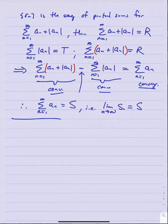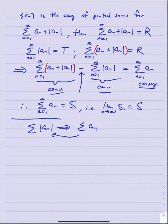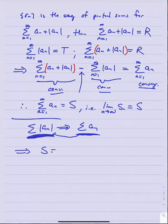Just to repeat: this implication only goes one way. When a series converges, the absolute value series need not converge. But this theorem says the reverse is always true: if the absolute value series converges, the series without absolute values will definitely converge. Putting it together, s = r - t, and since r ≤ 2t, we get s ≤ t.